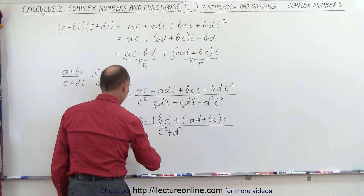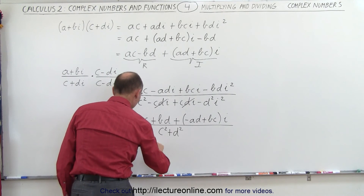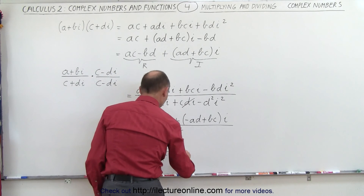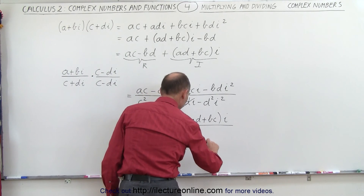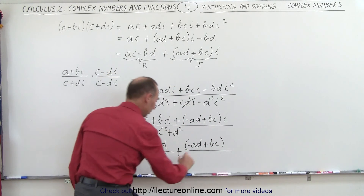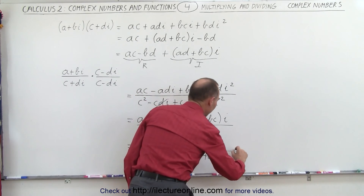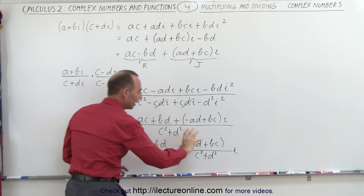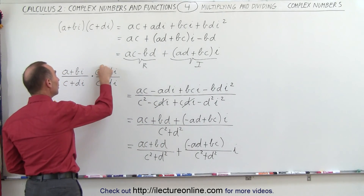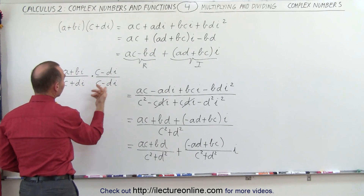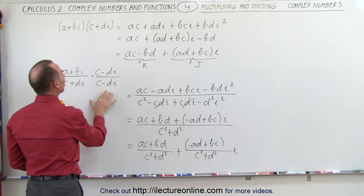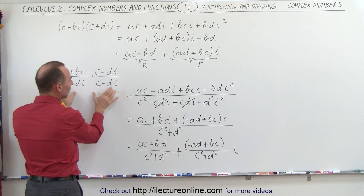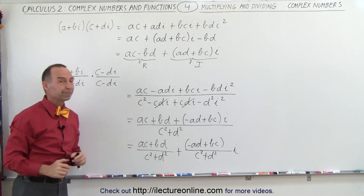The numerator has a real part and an imaginary part, both divided by a real denominator. So the real part of the solution becomes (A·C plus B·D) divided by (C-squared plus D-squared). And the imaginary part becomes (minus A·D plus B·C) divided by (C-squared plus D-squared), times i. When we divide one complex number by another, we end up with a real part and an imaginary part. The trick is multiplying both numerator and denominator by the conjugate of the denominator, which eliminates the imaginary term in the denominator. And that's how it's done.